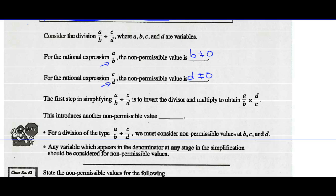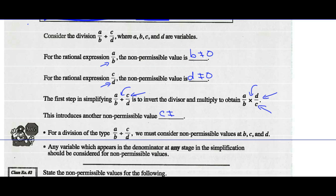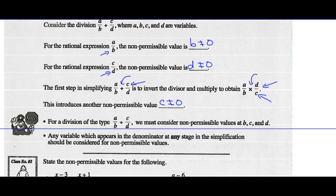Recall that the first step is changing this division statement into a multiplication statement by taking the reciprocal of our divisor. That makes C over D into D over C. This introduces yet another non-permissible value. We now have a denominator of C, which means C cannot equal 0 either. So for a division of the type A over B divided by C over D, we must consider the non-permissible values for B, C, and D. Any variable which appears in the denominator at any stage must be considered for a non-permissible value.